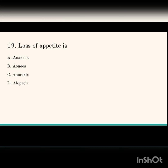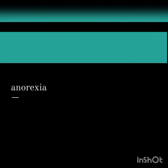Next question: loss of appetite. The options are anemia, apnea, anorexia, and alopecia. Loss of appetite is anorexia. Anemia means decreased hemoglobin count; apnea means cessation of breathing; alopecia means loss of hair.